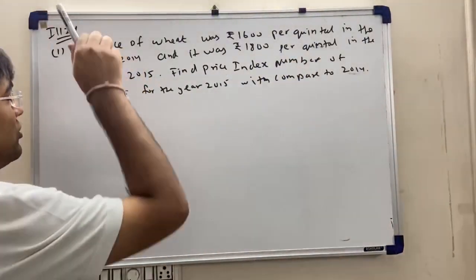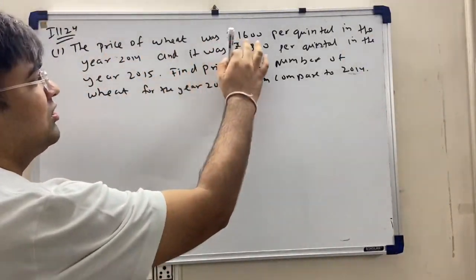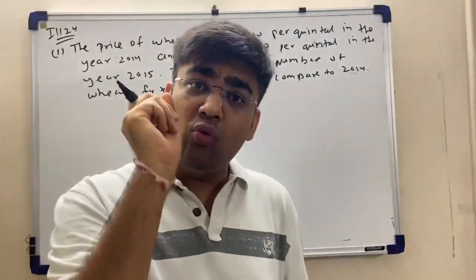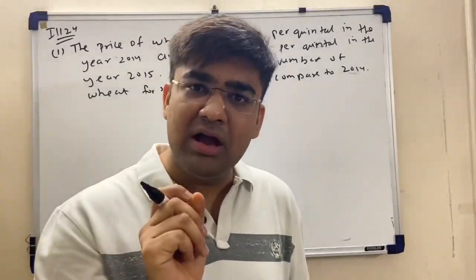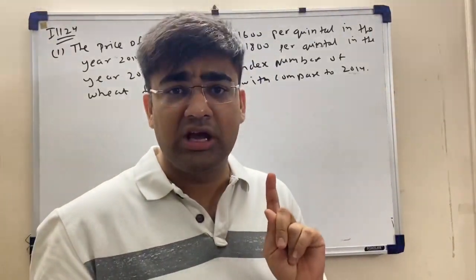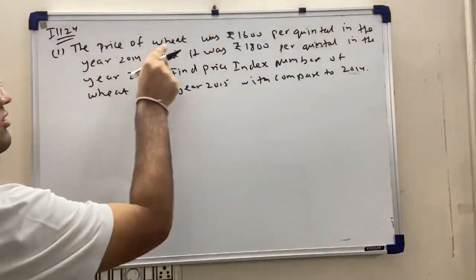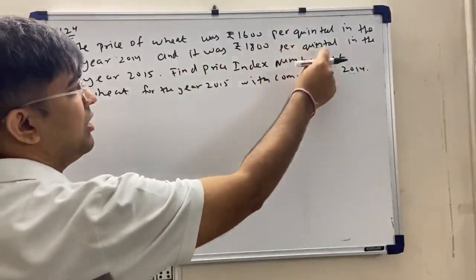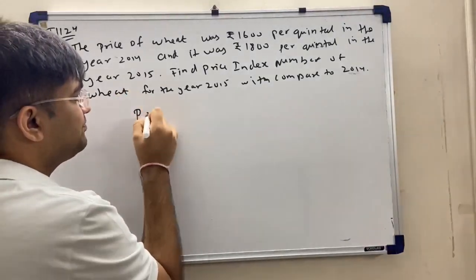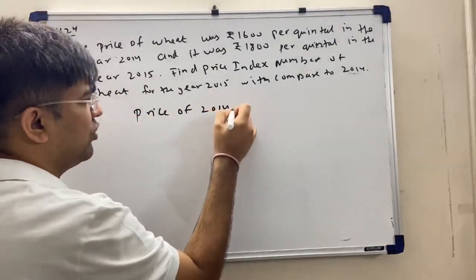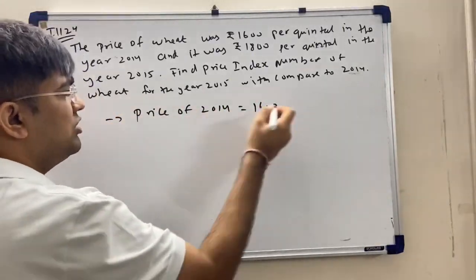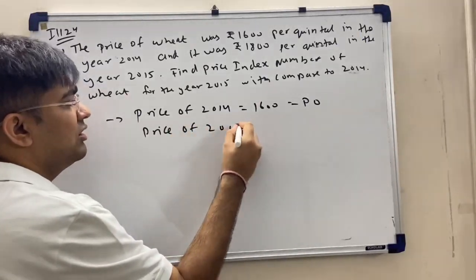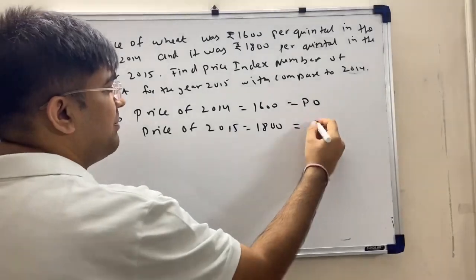We are starting Illustration number 24. The price of wheat was 1600 per quintal in the year 2014. This is a two-mark question — the most important thing is to understand the question. The price of wheat was 1600 per quintal in 2014 and 1800 per quintal in 2015. So P0 is 1600 and P1 is 1800.